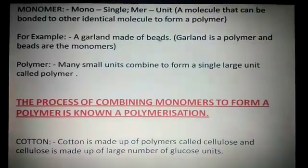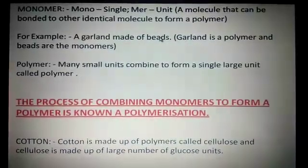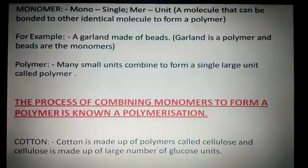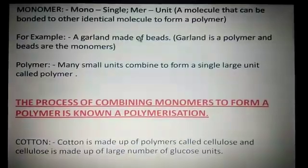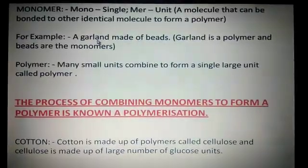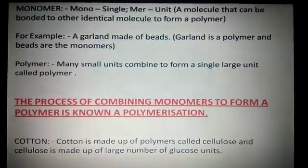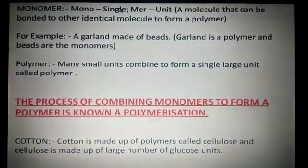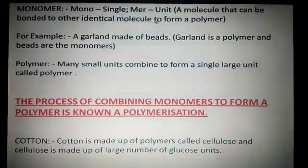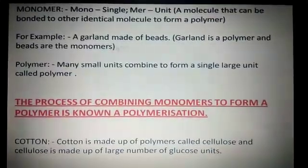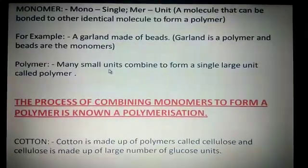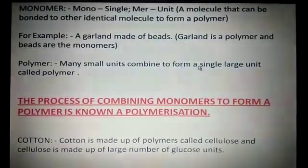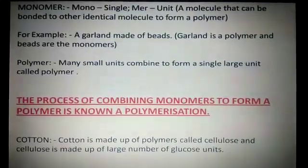For example, I took blue color beads, and then with the help of a thread, I make a garland. Joining these beads to make a garland — in fiber terms, we say joining the monomers, small identical monomers, to form a polymer. So, the definition of polymer is: many small units combine to form a single large unit called polymer.